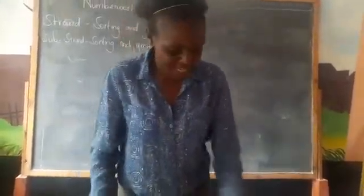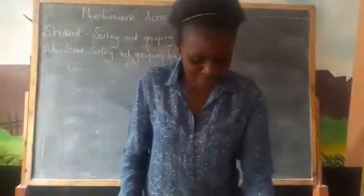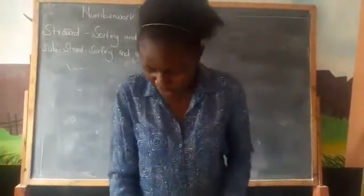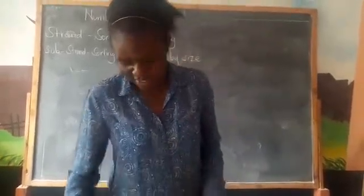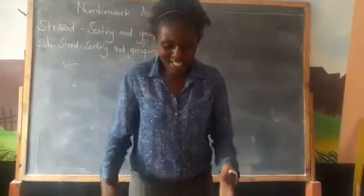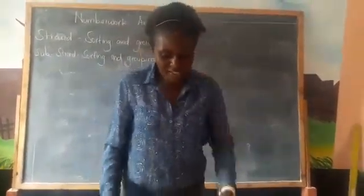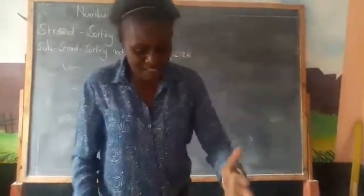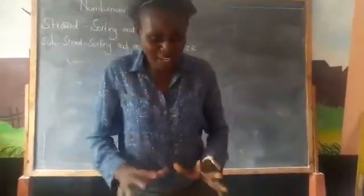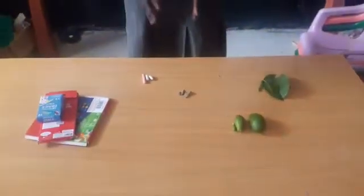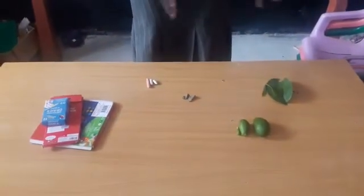On top of my table here, I have different objects: leaves, avocado, stones, pieces of chalk, and boxes. So I'm going to have three different groups on my table. The first one is going to be the small, the smaller, and the smallest. I'm going to arrange all these items into groups of the same different sizes.